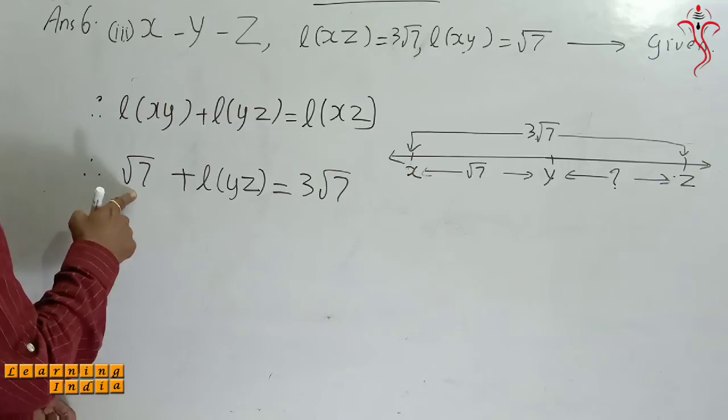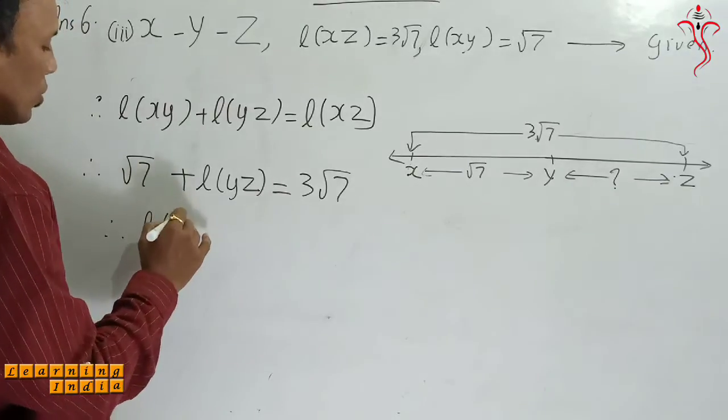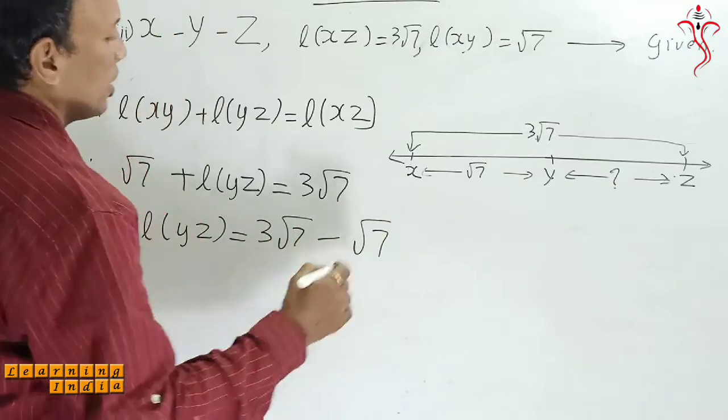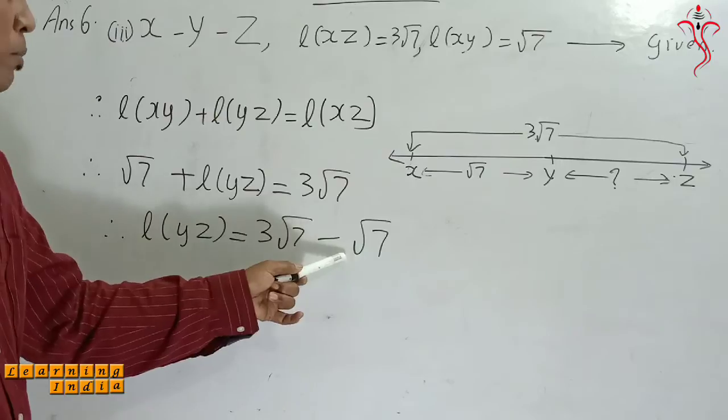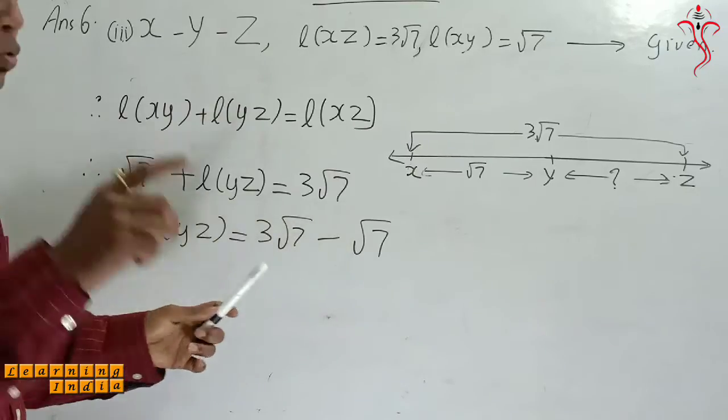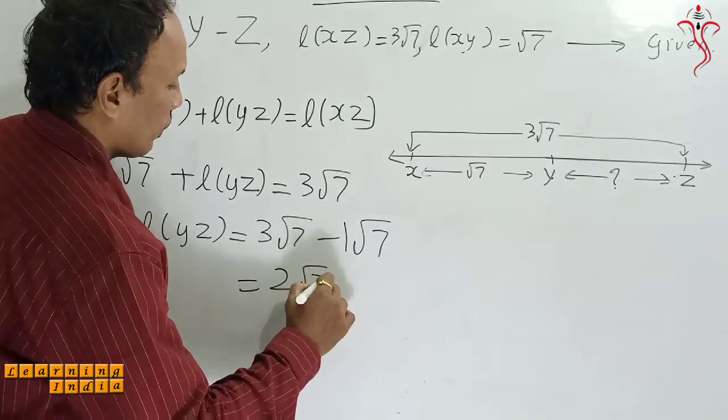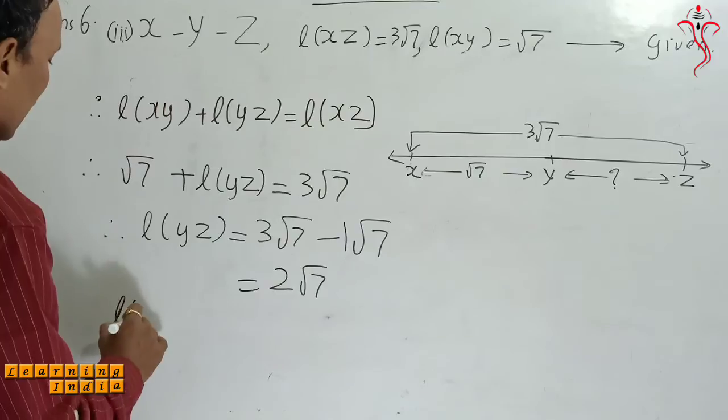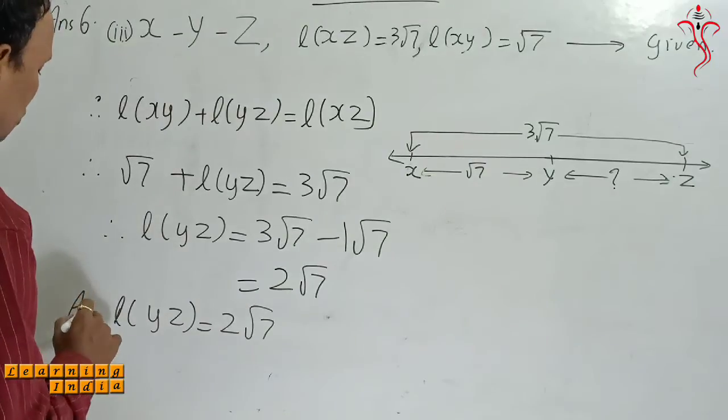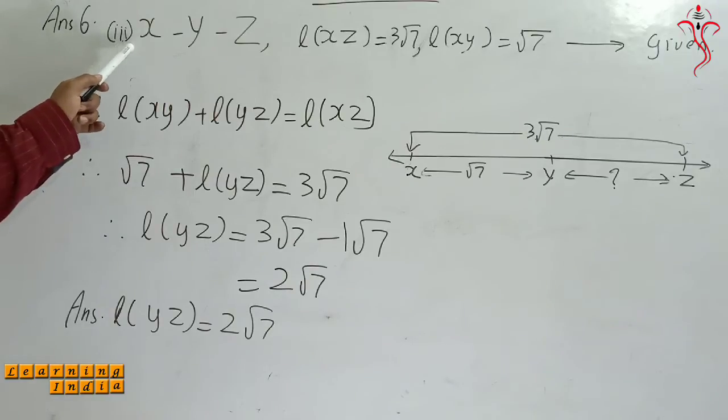Therefore √7 goes to the right hand side, it becomes minus. So then YZ is equal to 3√7 minus √7. Here √7 has coefficient 1, so we will take it as 1. So 3 minus 1 is 2. Coefficient 1, so 3 minus 1 is 2√7. So we got the answer as length YZ is equal to 2√7. This will be your final answer for question number 6 ka sub-part number 3.